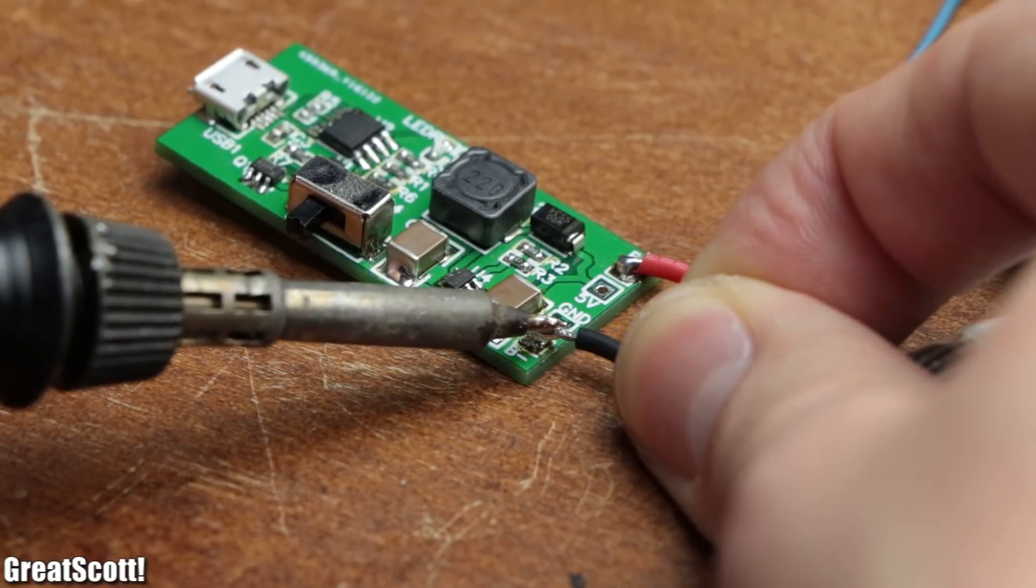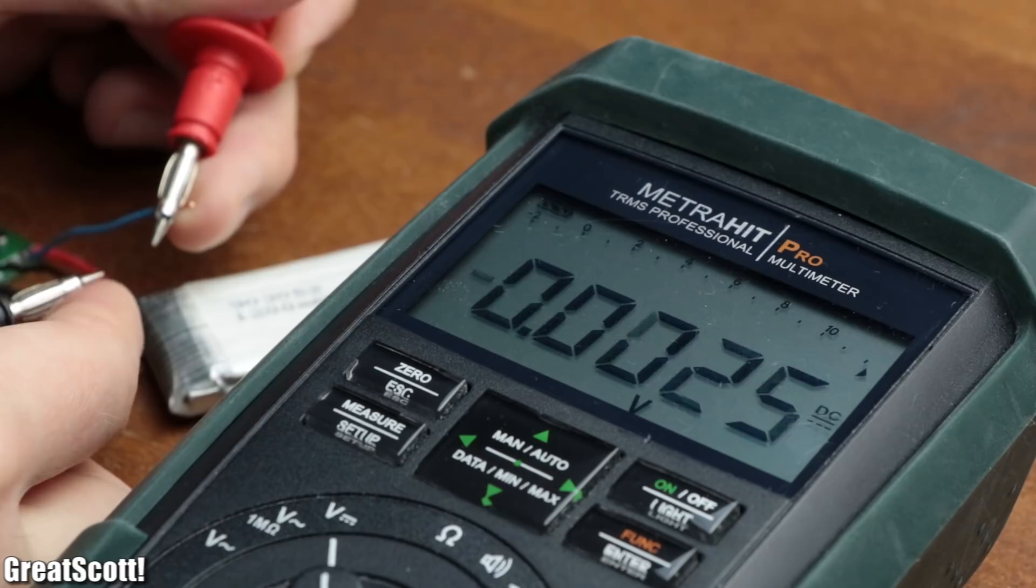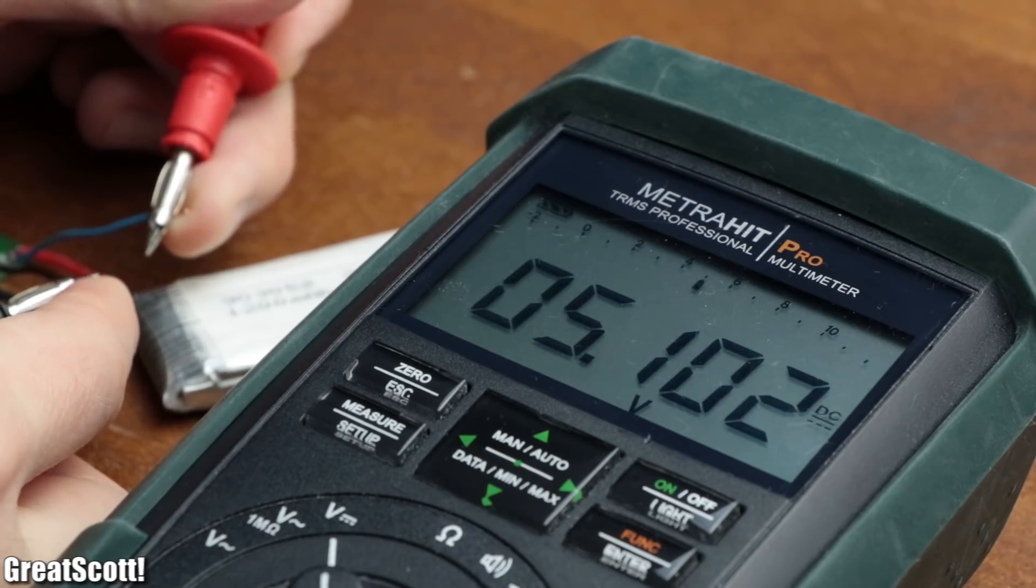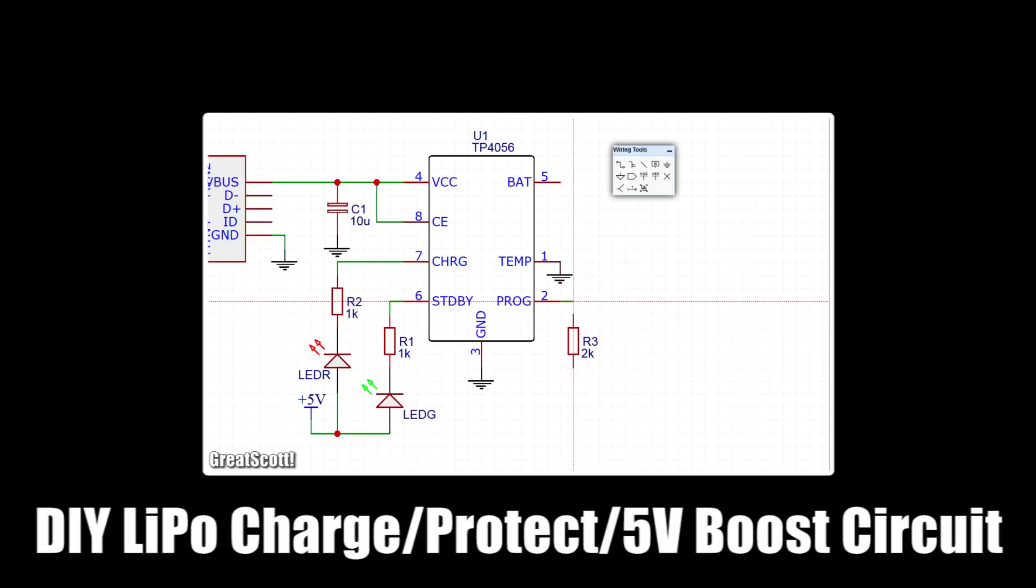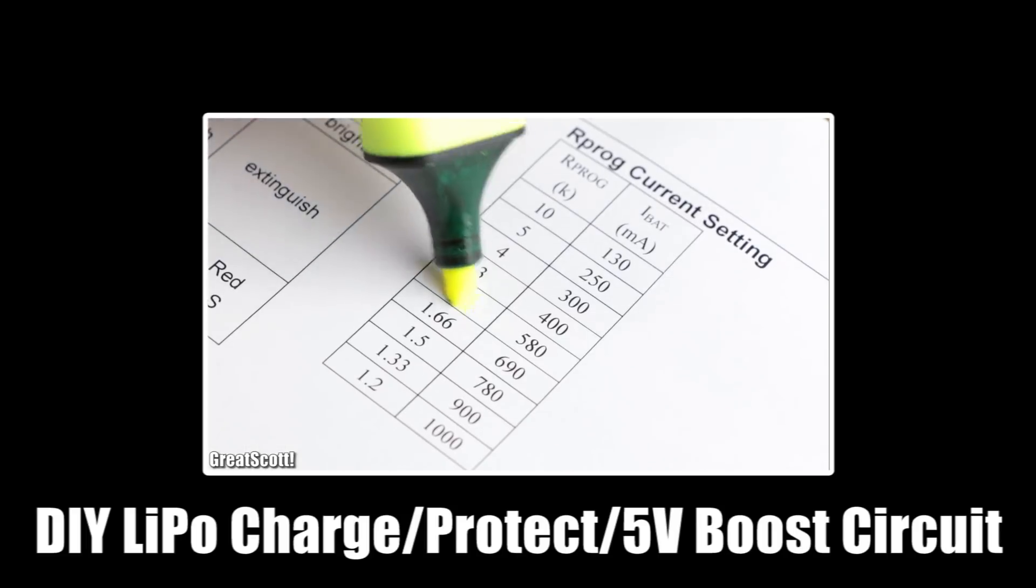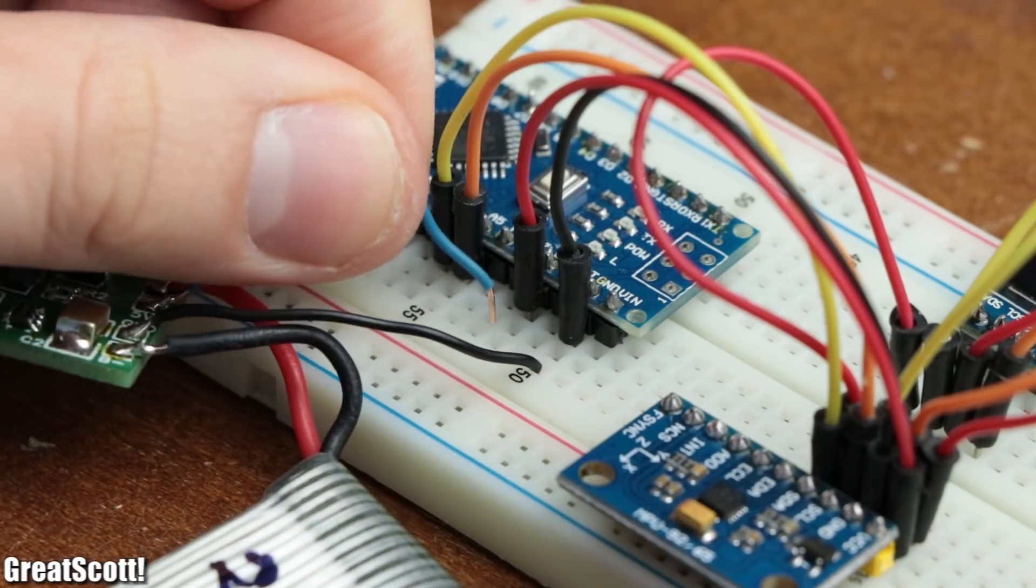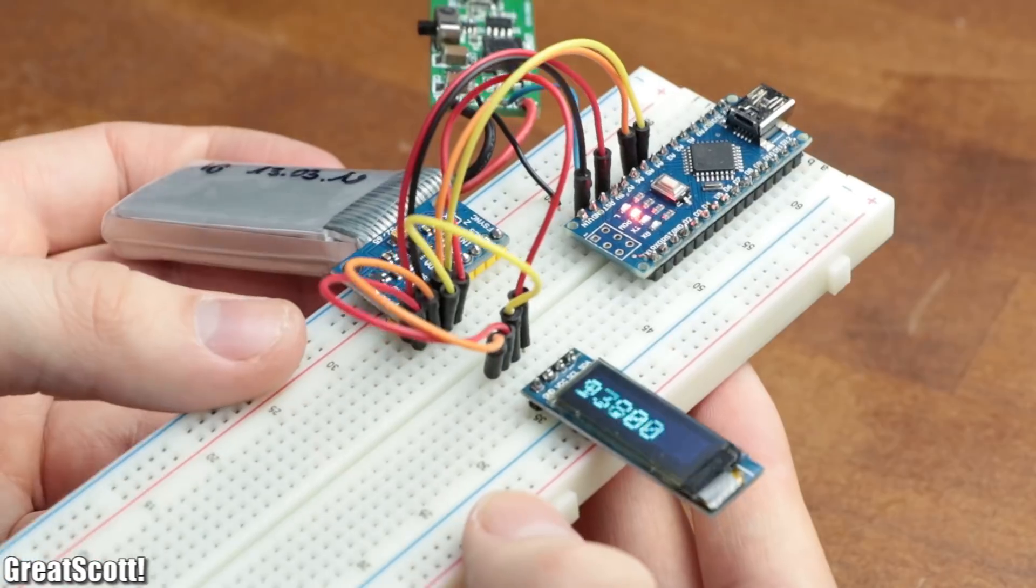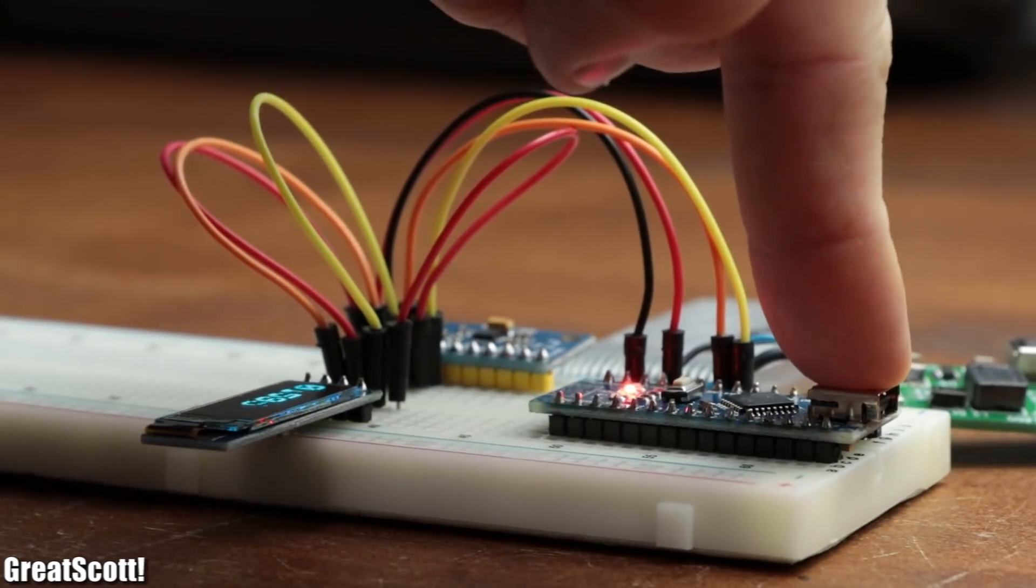To the battery, I also added my homemade LiPo charge protect boost circuit to create a stable 5 volts voltage for the circuit and being able to charge the battery. Feel free to watch the video about it if you are interested in creating your own. But of course, adding all those components to a breadboard does not equal a spirit level, since a breadboard is not very level to begin with.